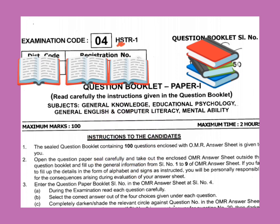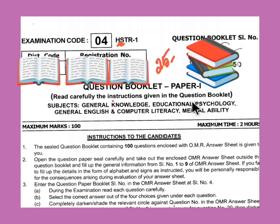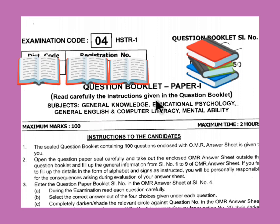In short, the marks allotted for the subjects in Paper 1 are: General Knowledge carries 25 marks, Educational Psychology 25 marks, Mental Ability 25 marks - that is 75 marks. The remaining 25 marks is allotted for General English and Computer Literacy. Usually General English will be 12 marks and Computer Literacy 13, but this may interchange. The question paper is in both Kannada and English.